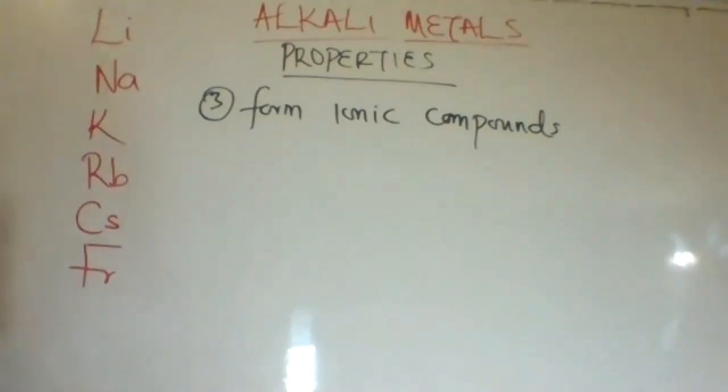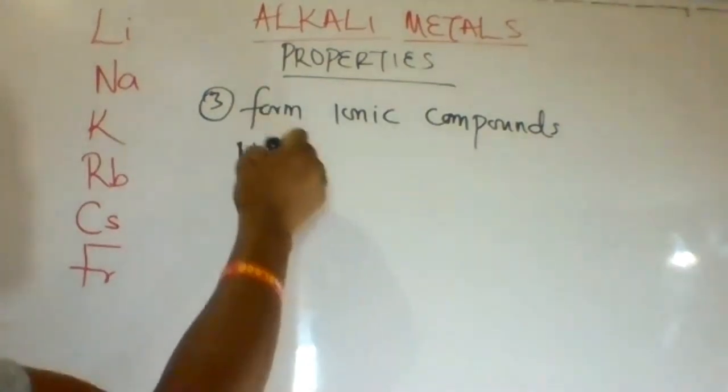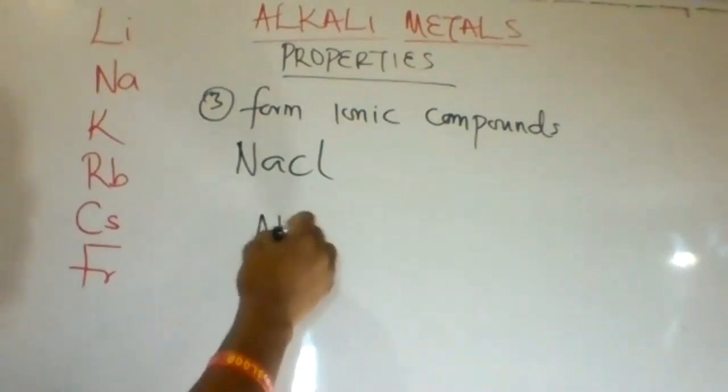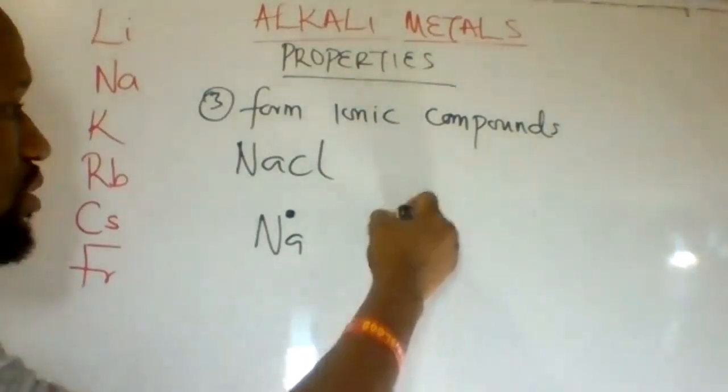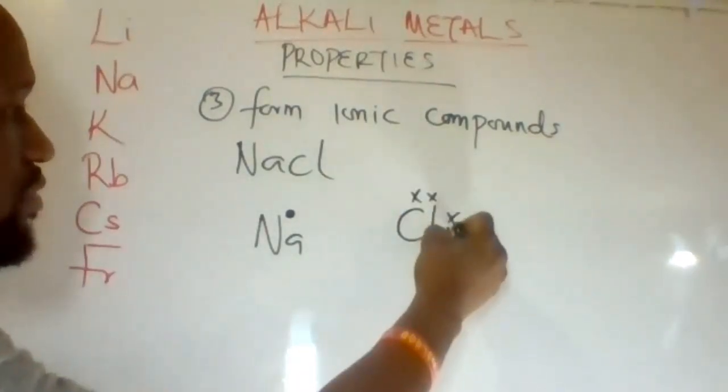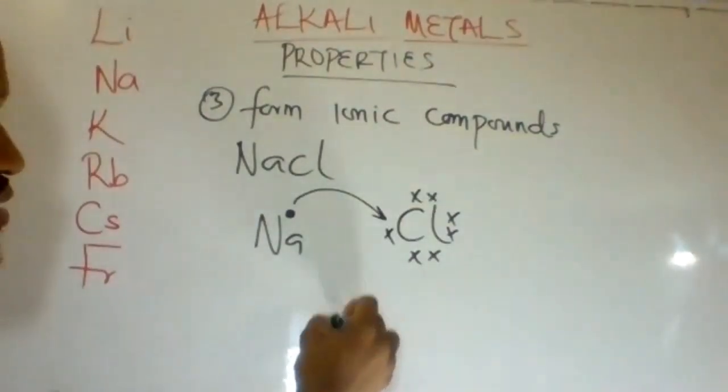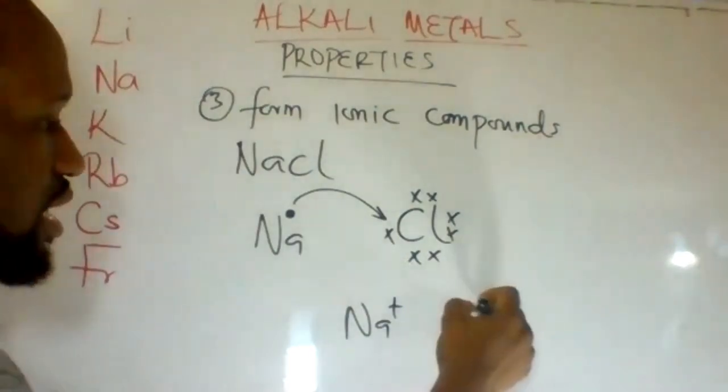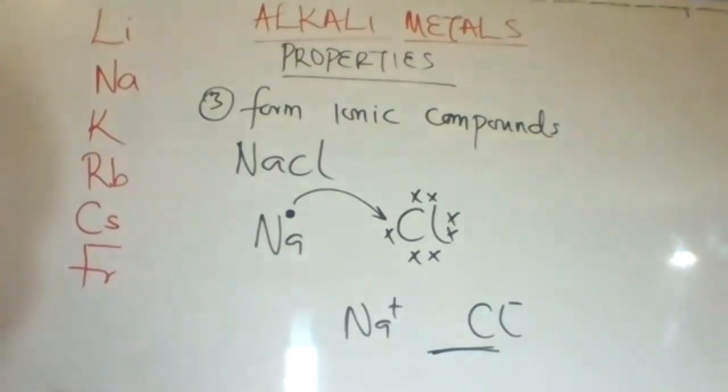Alkali metals donate electrons to form ionic compounds, for example, in the formation of sodium chloride. Sodium, with one electron on its valence or last shell, donates that electron to chlorine, which has seven electrons. This donation makes sodium positive and chlorine negative, forming the ionic compound sodium chloride.